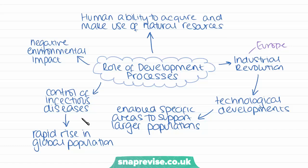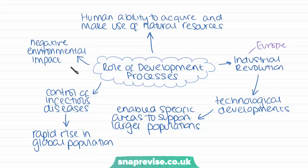Through a reduction in infectious disease cases, this allowed a rapid rise in global population — one of the main reasons why world population grew from about 1 billion in the 1800s to 7 billion in 2011. This rapid population growth and the process of development have had many negative environmental impacts. The impacts of individuals depend on where they live and their use of resources and services, so people in less developed countries impact the environment differently due to their different levels of development.